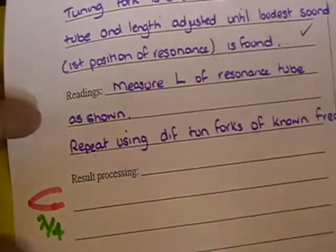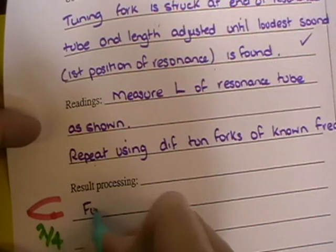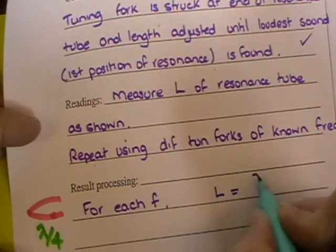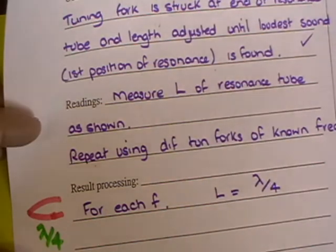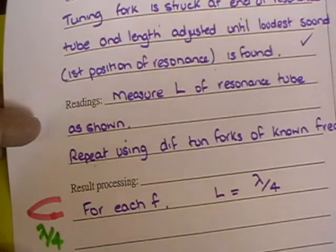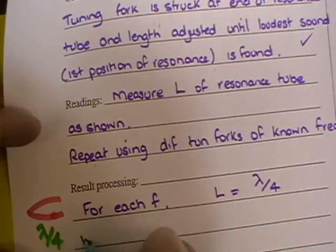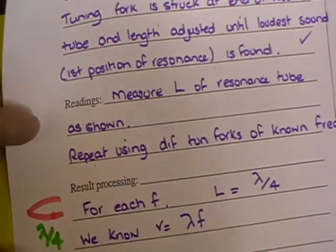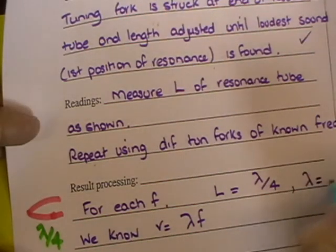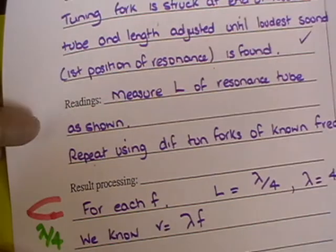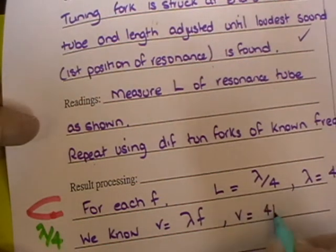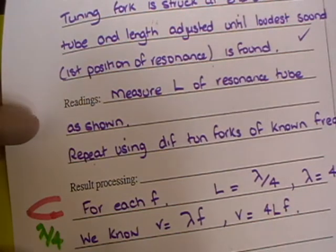So the result processing for each frequency, the length of the tube is equal to a quarter of a wavelength. So if we know that V is equal to lambda F, but that means that lambda is equal to four times the length that you measure each time. So V is equal to, therefore V is equal to 4LF.